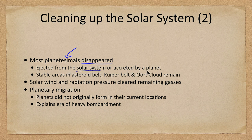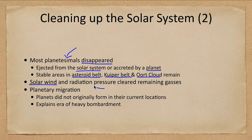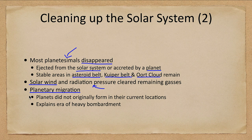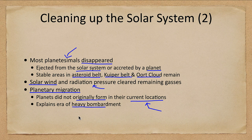Most of the planetesimals then disappear — they're either ejected from the solar system or accreted by a planet — except for the stable areas found in the asteroid belt, the Kuiper belt, and the Oort cloud. The remaining gas was removed by solar wind and radiation pressure. However, that wasn't the end: we also had planetary migration. Planets likely did not originally form in their current locations. This can explain an era of heavy bombardment early in the history of the solar system, when planets were moving and disrupting the orbits of smaller objects.